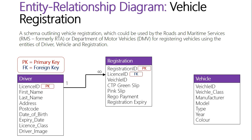In registration, license ID is used as the foreign key. Using that foreign key means that registration can then reference all the attributes of the driver entity — the first name, last name, address, and all the rest of the actual driver who has been registering this vehicle. From the registration entity you can see a one and an infinity symbol, which means a one-to-many relationship.